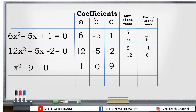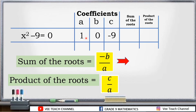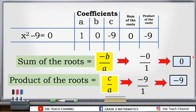For x squared minus 9 is equal to 0, our a is 1, b is 0, and c is negative 9. Substituting: negative b over a is negative 0 over 1, which simplifies to 0. Remember, 0 is neither negative nor positive — it is neutral. For the product, c over a is negative 9 over 1, which simplifies to negative 9. So the sum is 0 and the product is negative 9.